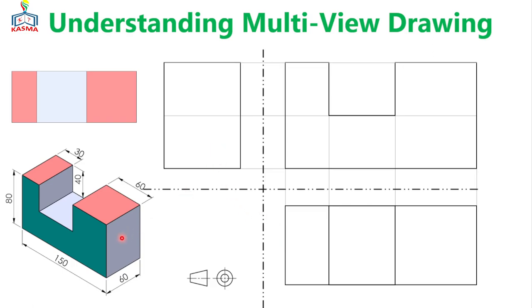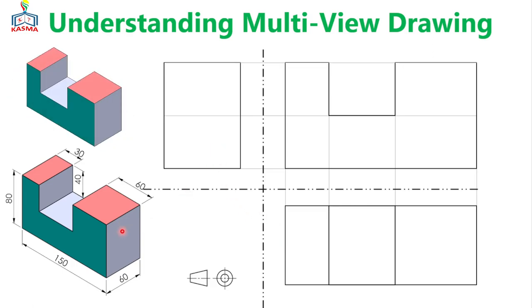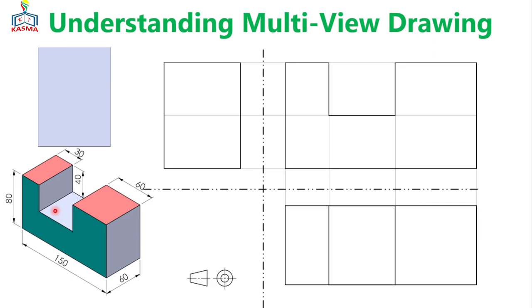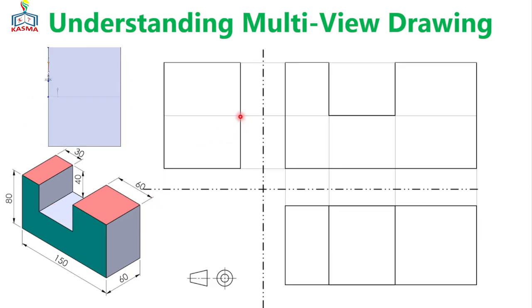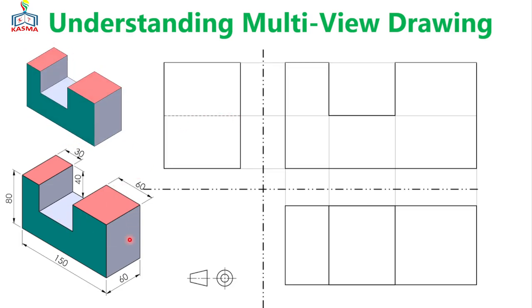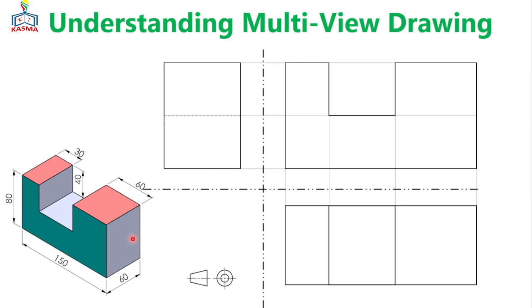For the right side view, when you are looking from this side, you'll see only one surface as visible — but there is a hidden surface. That hidden surface will be shown using a hidden line to indicate that there is some feature behind this surface. So the multi-view drawings of this object become this one.